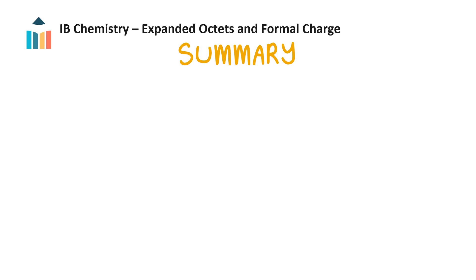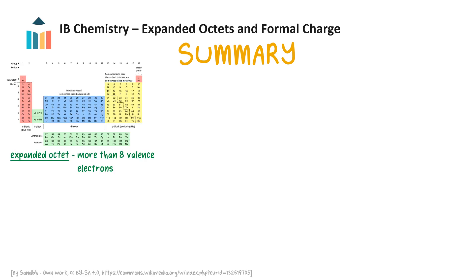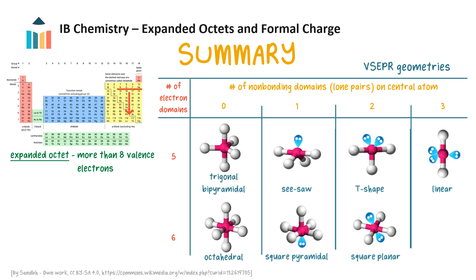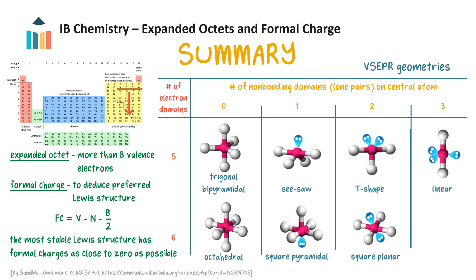To summarize: main group elements in period 3 and below are capable of using their d orbitals in bonding and can therefore have an expanded valence octet with more than 8 electrons. An atom with 10 valence electrons forms 5 electron domains, which orientate themselves in a trigonal bipyramidal arrangement, while 12 valence electrons form 6 electron domains in an octahedral arrangement. The molecular geometries depend on the number of bonding and non-bonding domains. When a molecule has more than one possible Lewis structure, formal charge is calculated to deduce the most stable structure — the one whose formal charges are as close to zero as possible.